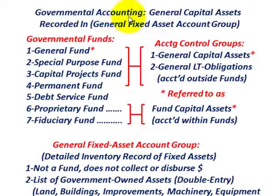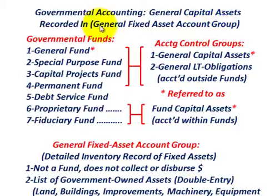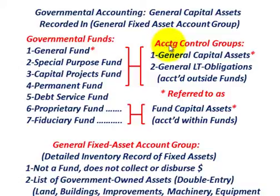What we're going to be going over here is governmental accounting for general capital assets. We're going to look at how we record those general capital assets in the general fixed asset account group. When we're talking about governmental accounting, it involves governmental funds, and when you invest in capital assets, you set up those assets in accounting control groups.